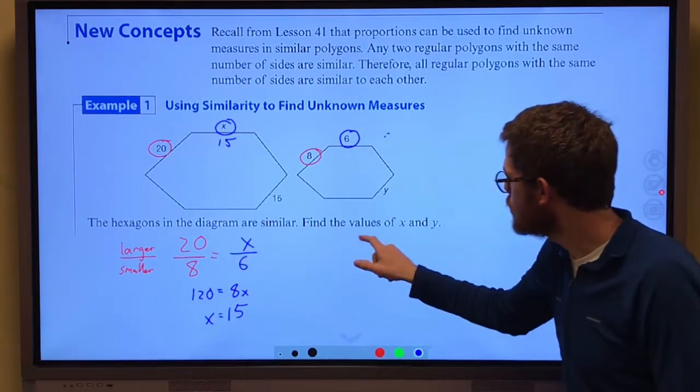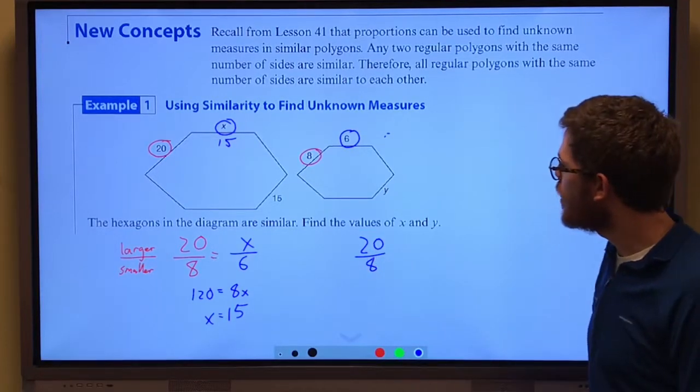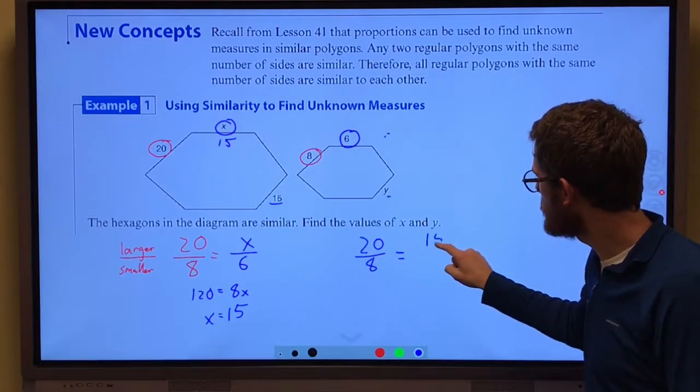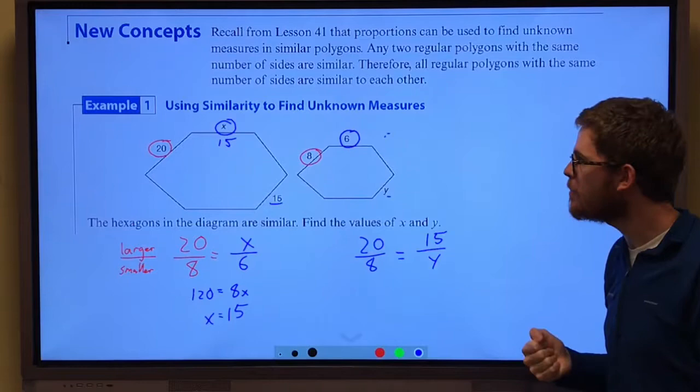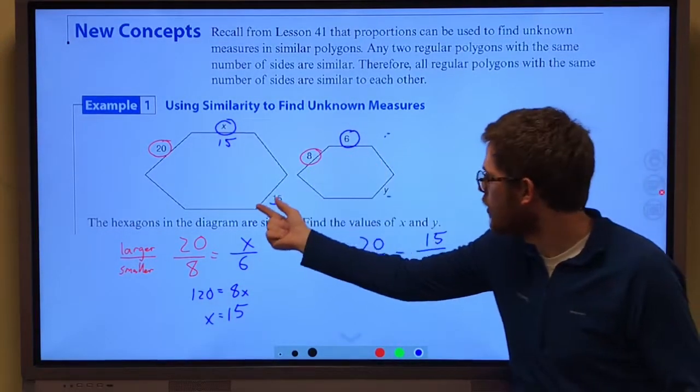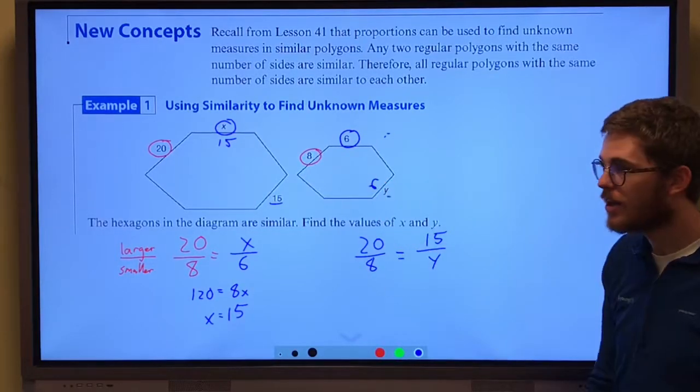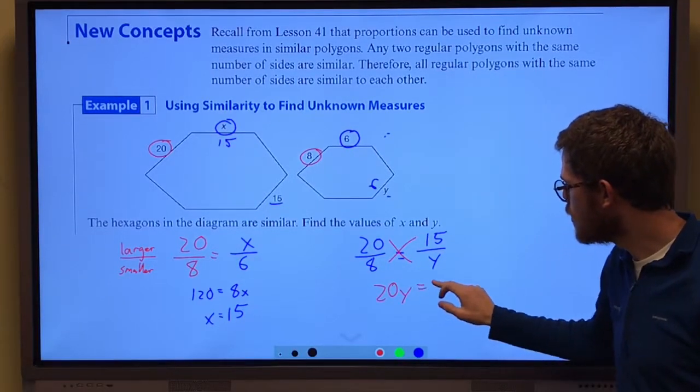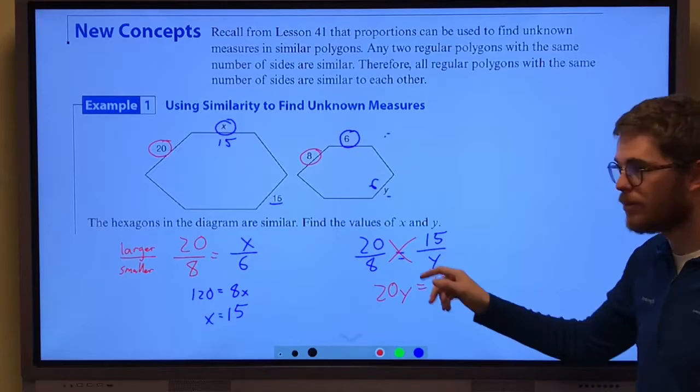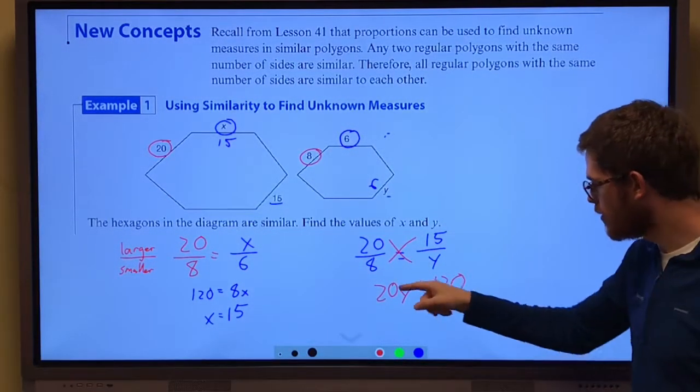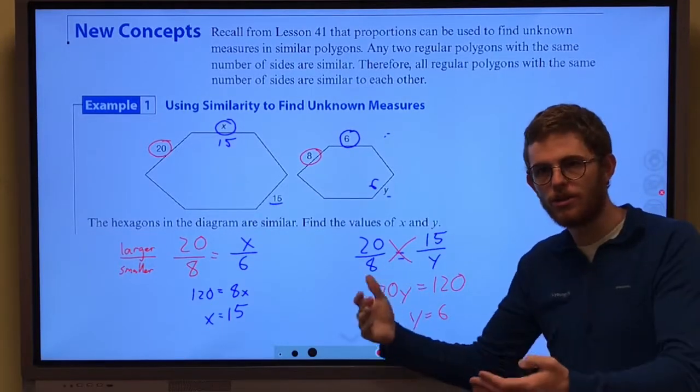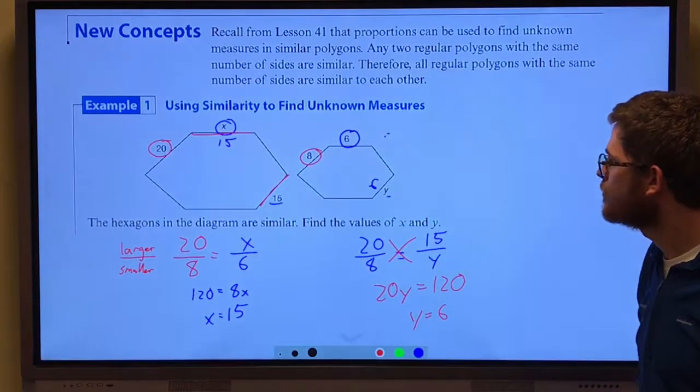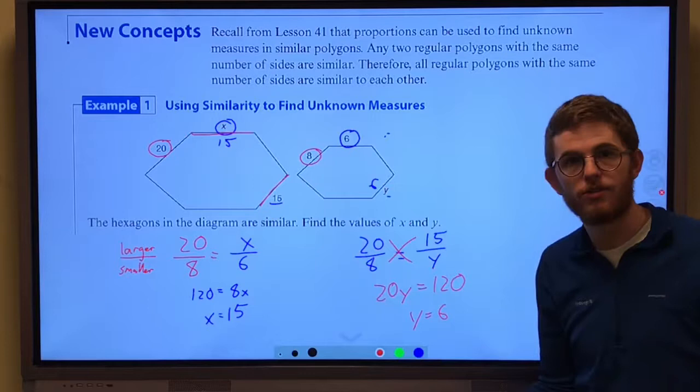I can still use that same ratio, twenty over eight, to find y. But if we realize what just happened here, when it's fifteen the larger, we know it's going to be six the smaller. Fifteen the larger means that y is going to have to be six. We can cross multiply, twenty y equals 120. Eight times fifteen is 120 and when we divide 120 by 20 we get six. So we can see that ratio is staying true. These side lengths right here are the same length. So their proportional sides are also going to be the same length.